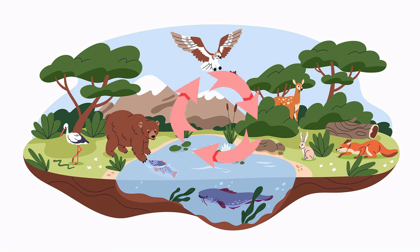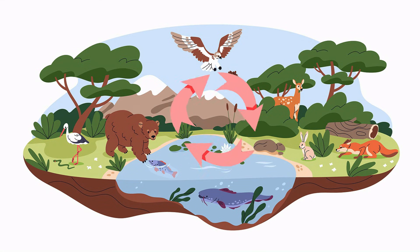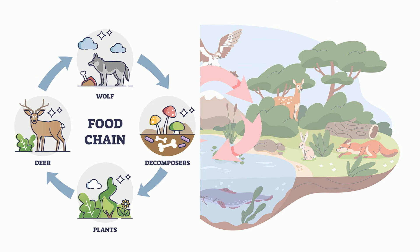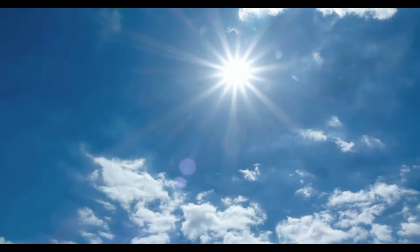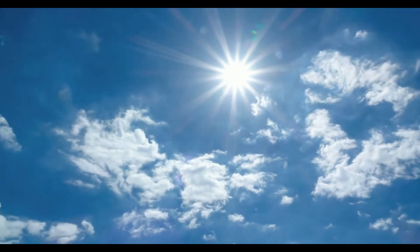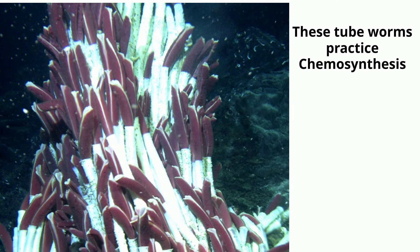Energy is always flowing in an ecosystem. This flow of energy can be represented with food chains and food webs. For most ecosystems, the ultimate energy source is the sun. However, there are some organisms that get their energy from reactions involving inorganic chemicals, and typically this involves the absence of sunlight. This is called chemosynthesis.